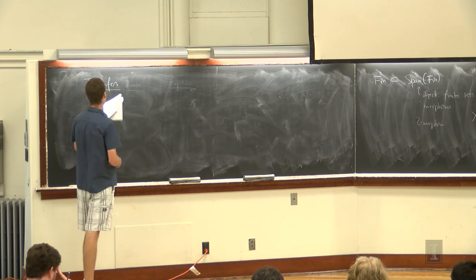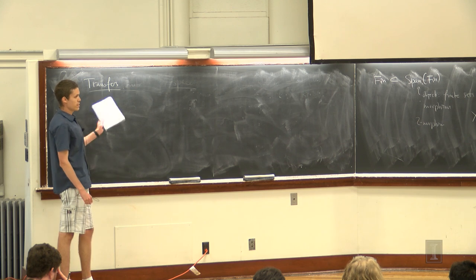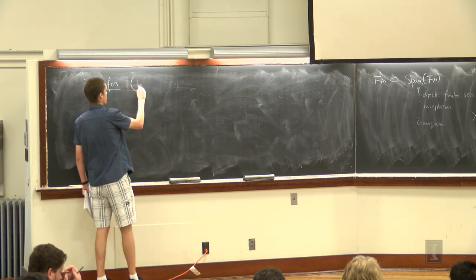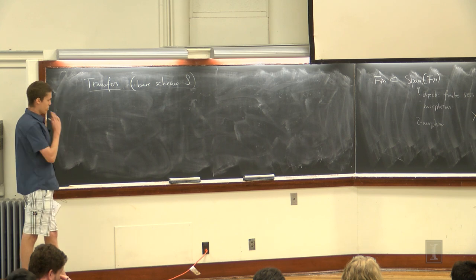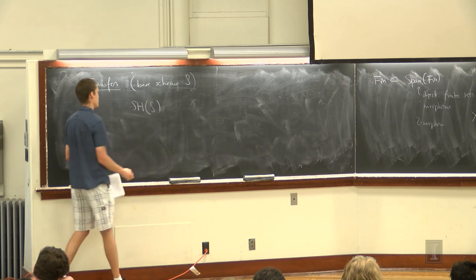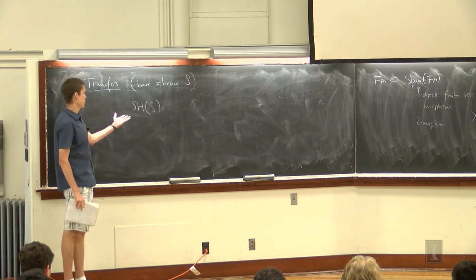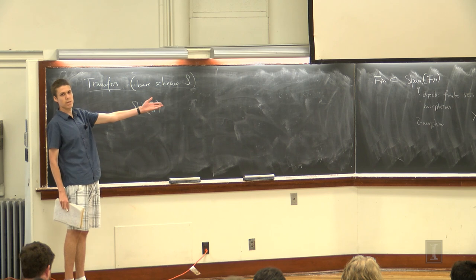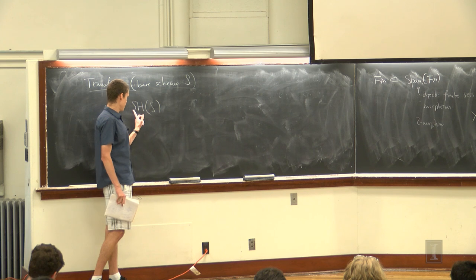I need a little digression to explain what kind of transfers arise in motivic homotopy theory. In the theorem, we worked over an infinite perfect field, but this discussion is more general and I can work over an arbitrary base scheme S. We have SH of S, the infinity category of motivic spectra. You start with motivic spaces over S and take spectrum objects with respect to the P1 suspension coordinate. By construction, there's a functor from smooth schemes over S to SH, which is sigma-infinity-plus.